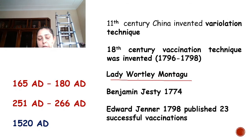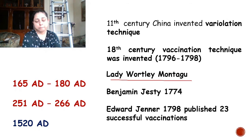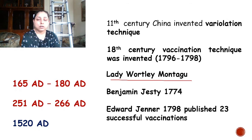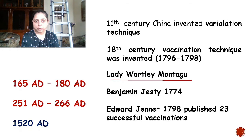Around that time, there was an observation floating around in England that people who worked with cows — like milkmaids and farmers — got infected with cowpox disease from the cows, and those people who had cowpox became immunized against smallpox. During epidemics, these people never used to get smallpox. This observation was widely known in England.